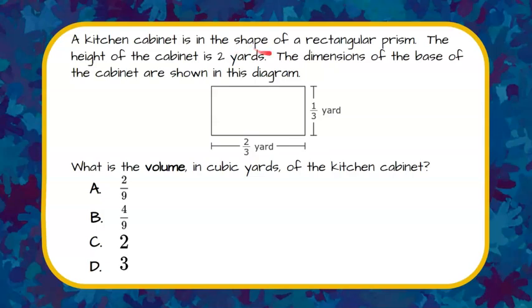A kitchen cabinet is in the shape of a rectangular prism. The height of the cabinet is two yards. The dimensions of the base of the cabinet are shown in this diagram. What is the volume in cubic yards of the kitchen cabinet?